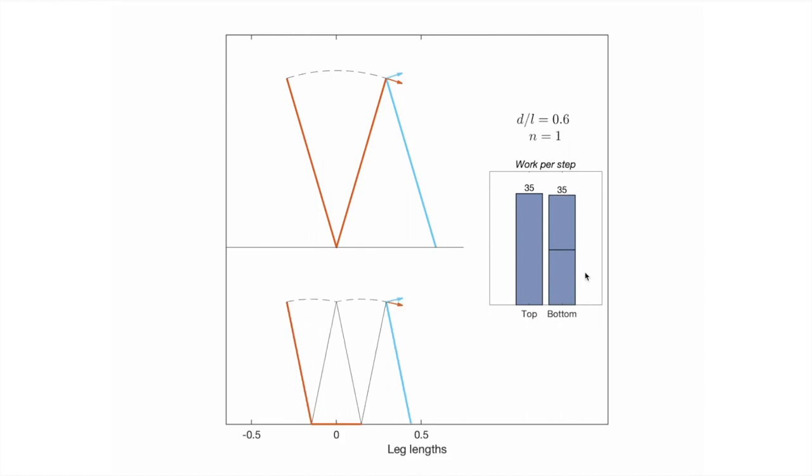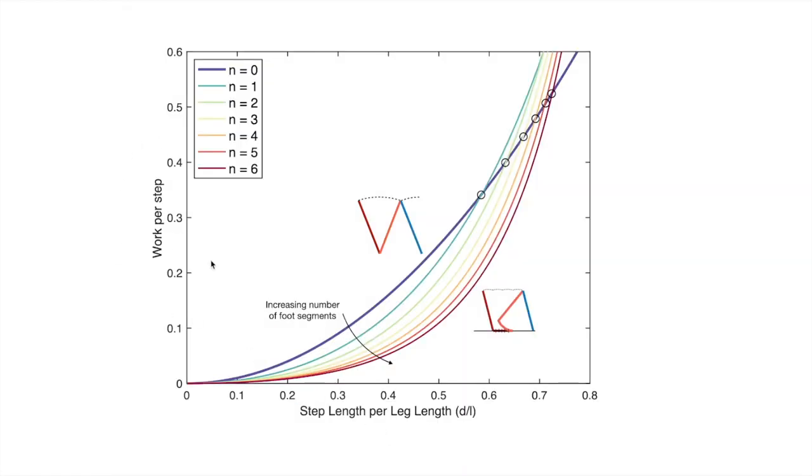Now let's look at the overall results. Here we have work per step as a function of step length normalized to leg length. The compass gate condition is shown as this blue line, and then we have different plantigrade conditions increasing the number of foot segments from one to six. You can see that each plantigrade condition intersects with the compass gate condition.